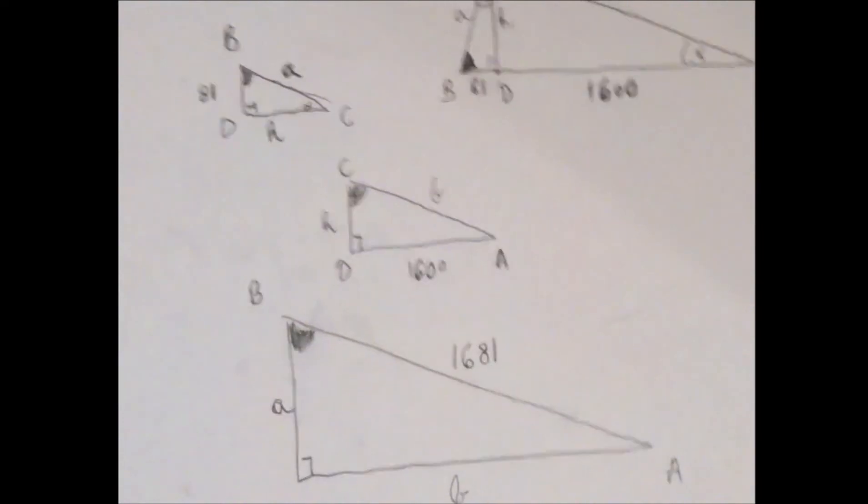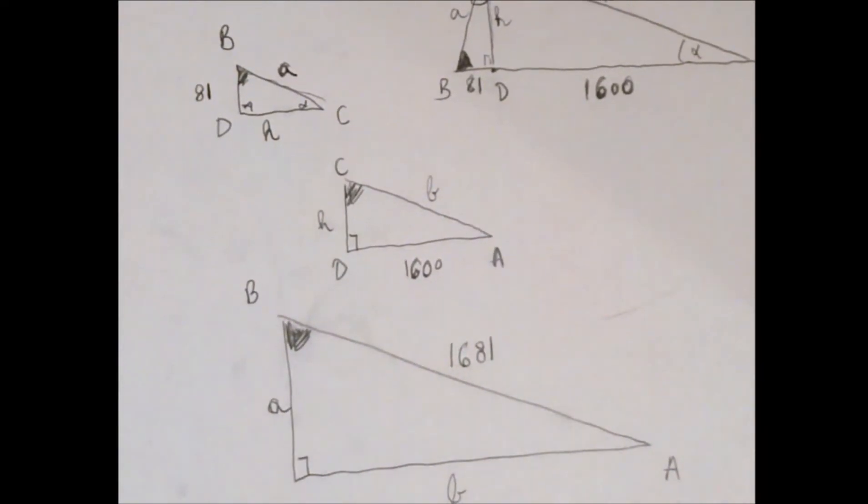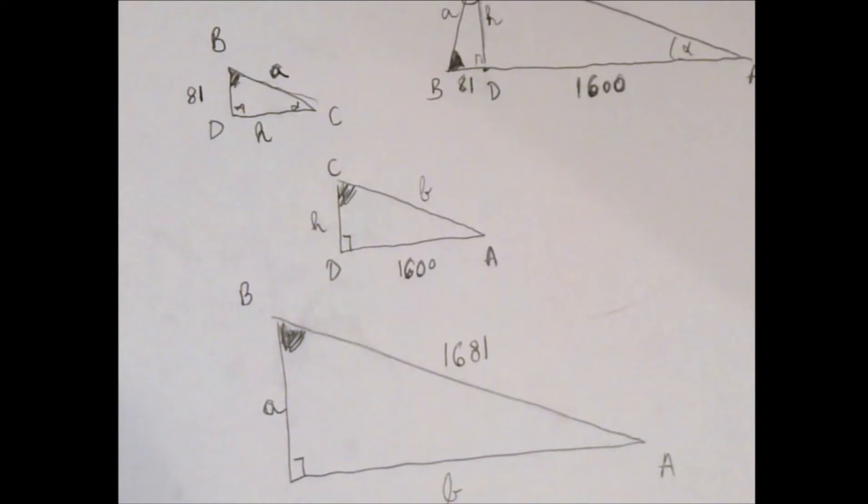Now we have three similar triangles, and we start looking for ratios that would enable us to solve for a, b, or h. But it's pretty hopeless because in the previous type of problems we found a ratio where there were three numbers and just one unknown.